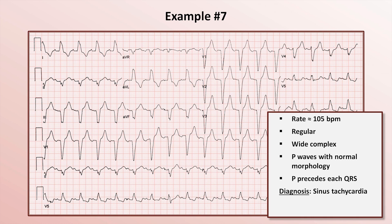Although we are given nothing about the patient's history, the morphology of these complexes is classic for a left bundle branch block. Specifically, there is a broad R wave in leads 1, AVL, and V6, without either a little Q wave or a significant S wave.